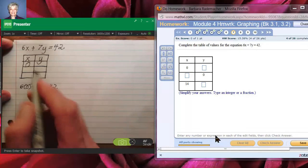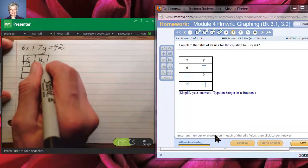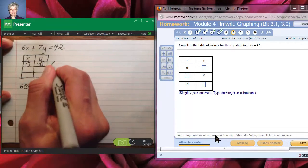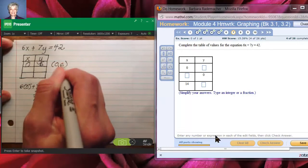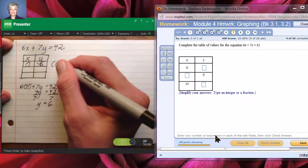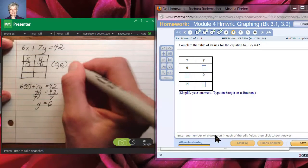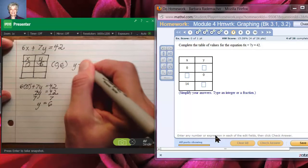So now we know that if x is 0, y is 6, and what that does is it gives us the point 0, 6. This point, with a 0 in that position, is called the y-intercept.